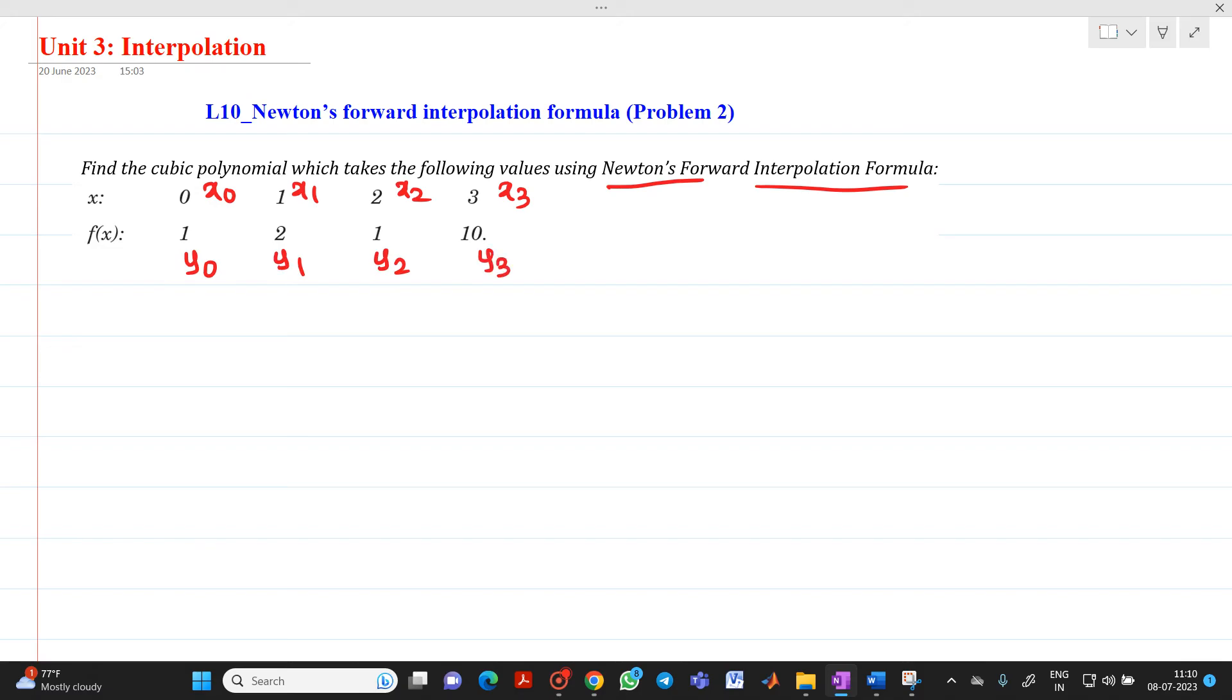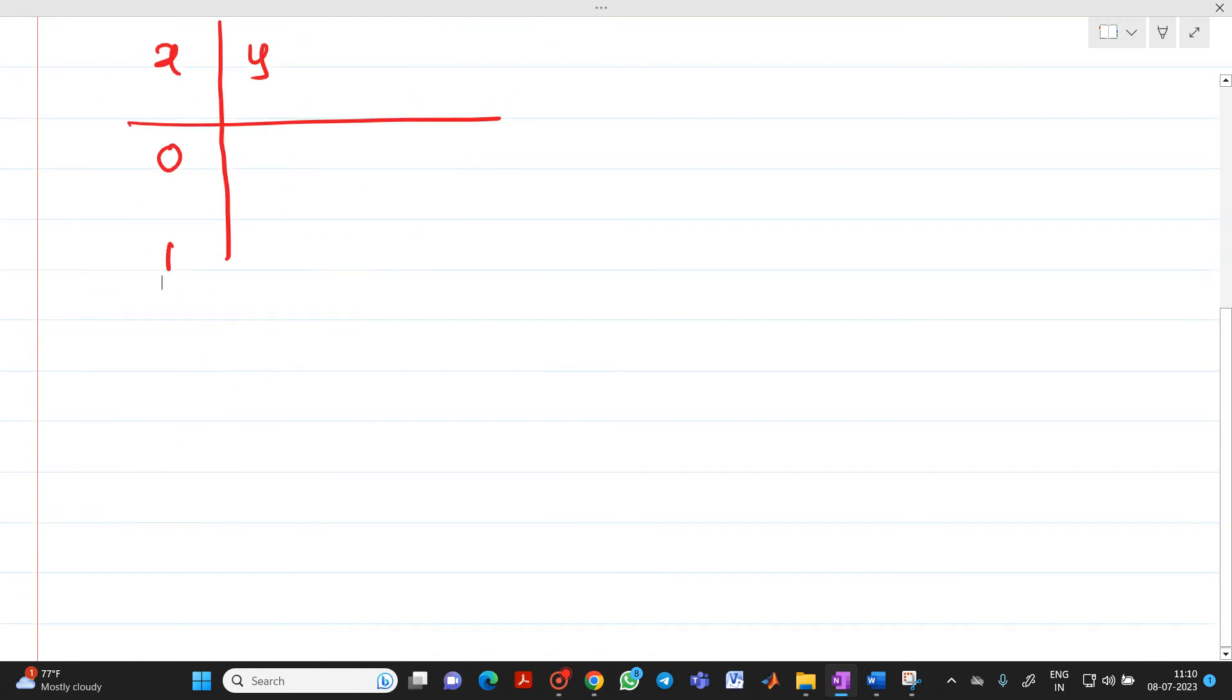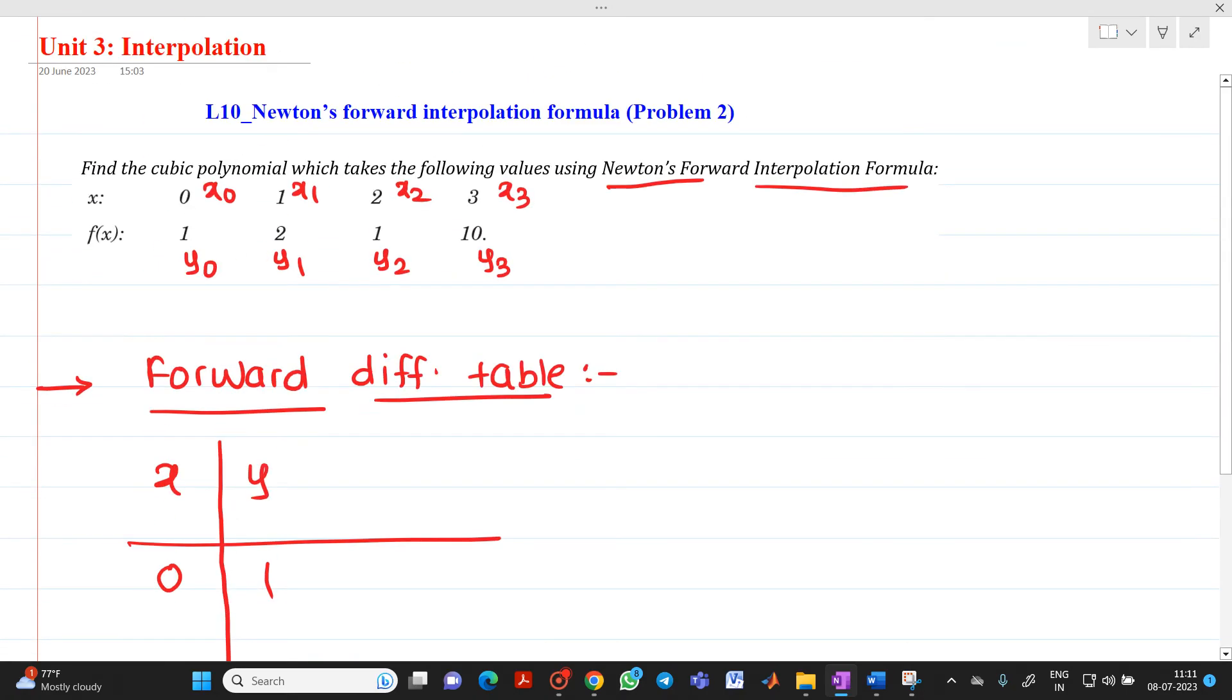Now here if you see first we have to prepare forward difference table. For this also it will carry some marks, it may be 2 or 3 marks for preparation of this table. So we know how to prepare this. This is your x, here it will be y. Now 0, 1, 2, 3 and corresponding values are 1, 2, 1 and 10. Here we have taken these values from the given data.